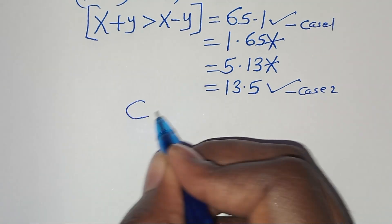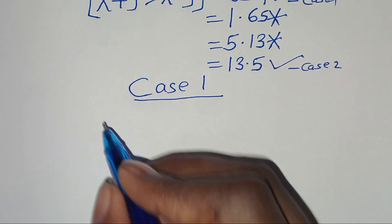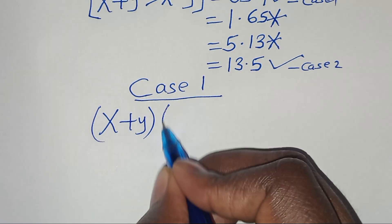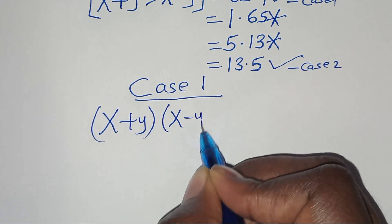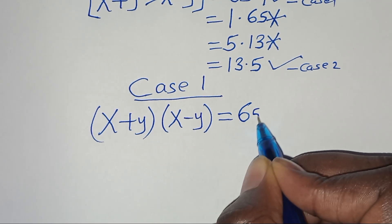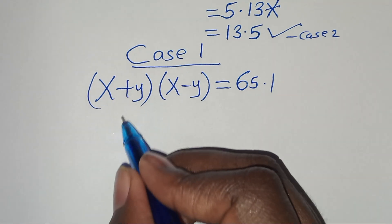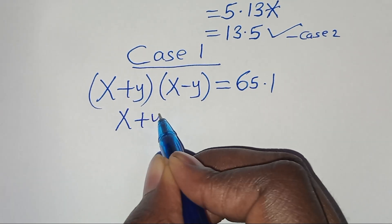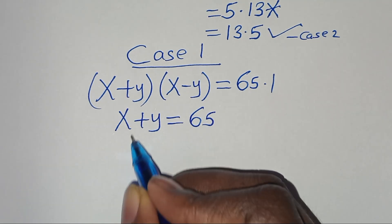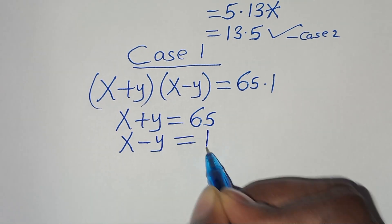Case 1: we have (x + y) multiplied by (x - y) equals 65 times 1. This implies that x plus y equals 65, and x minus y equals 1.